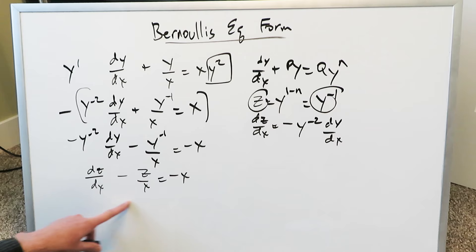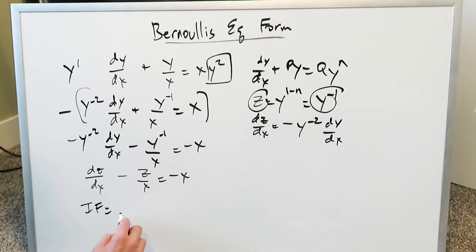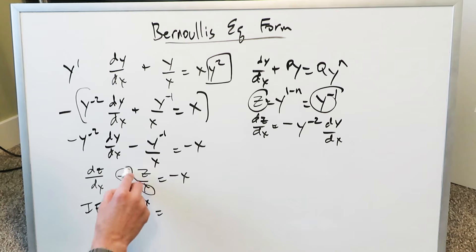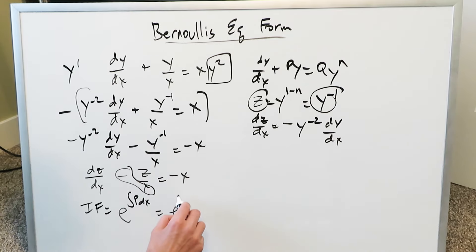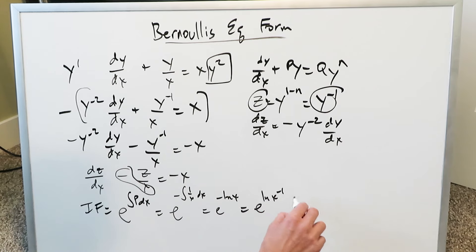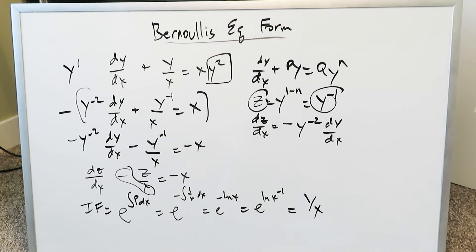The Bernoulli's form has been converted to the linear form. Now from this point you can do the integrating factor determination: e to the exponent of the integral of p dx. What is p here? It's the coefficient, which is minus 1 over x. So you get e to the power of the integral of minus 1 over x dx, which is e to the minus ln x, which is e to the ln x to the power of minus 1 — and using properties of logarithms, all of that equals 1 over x.